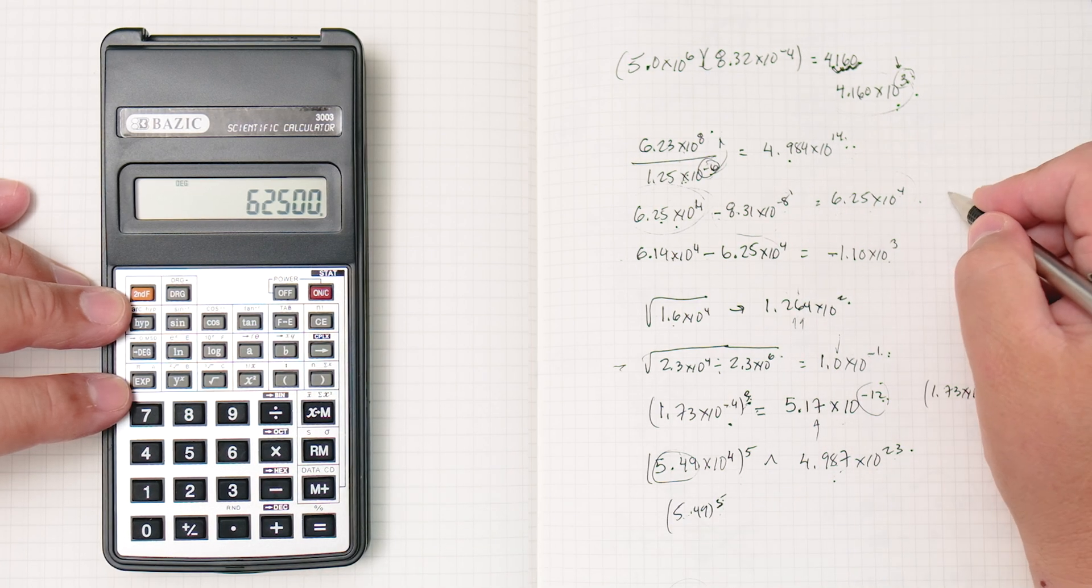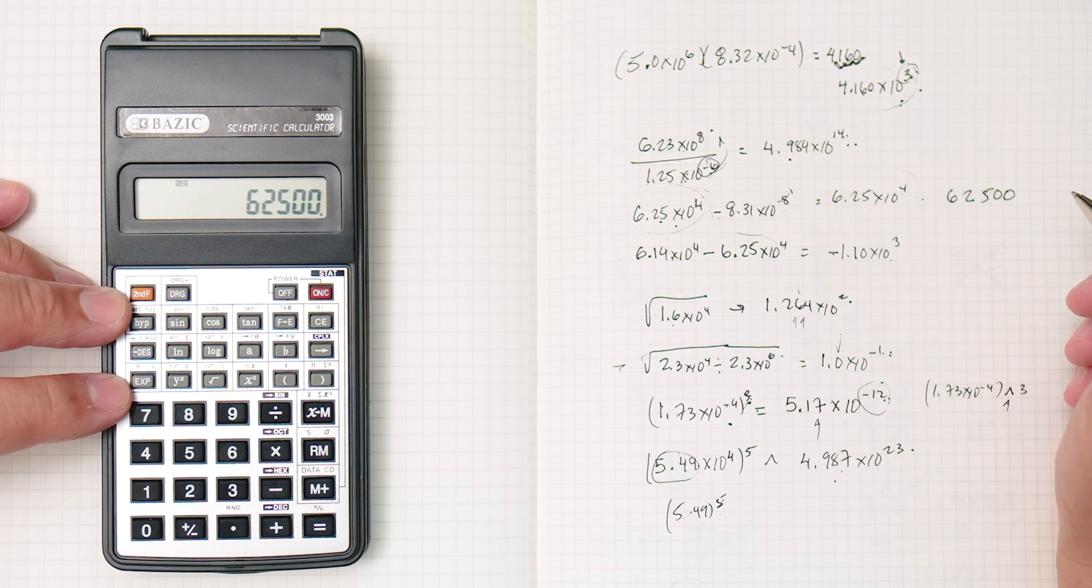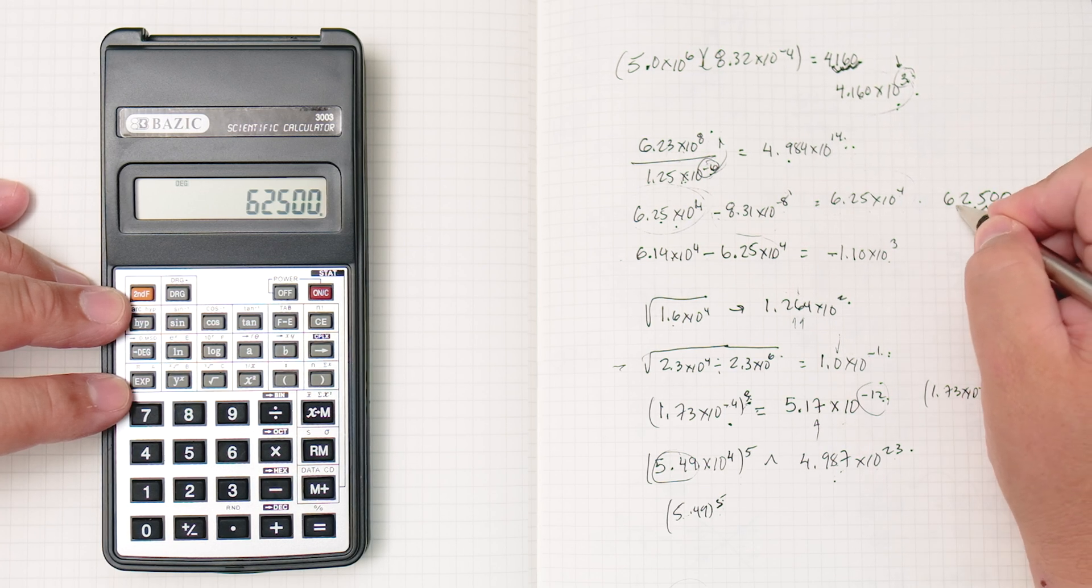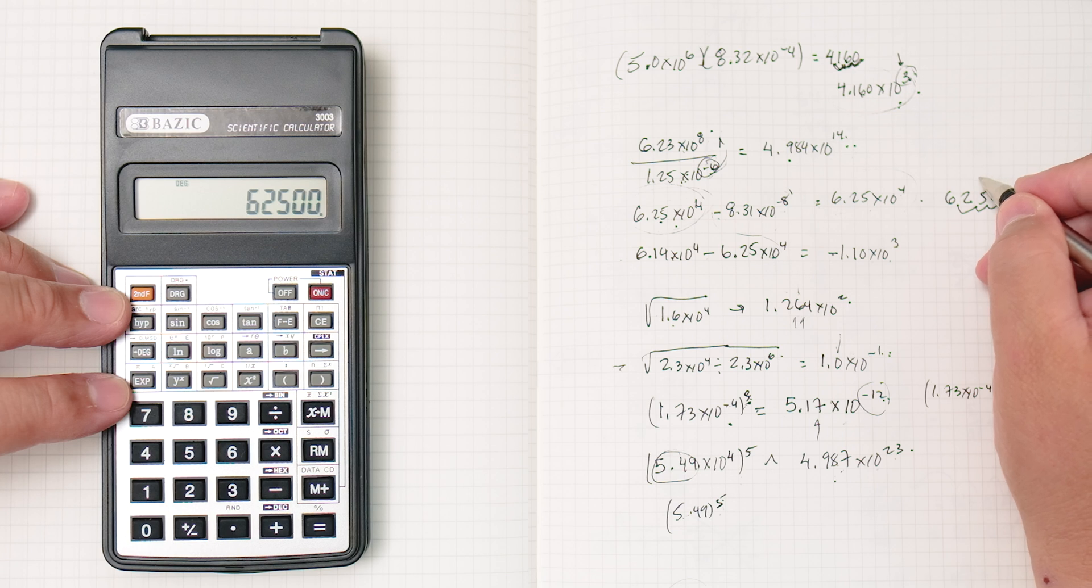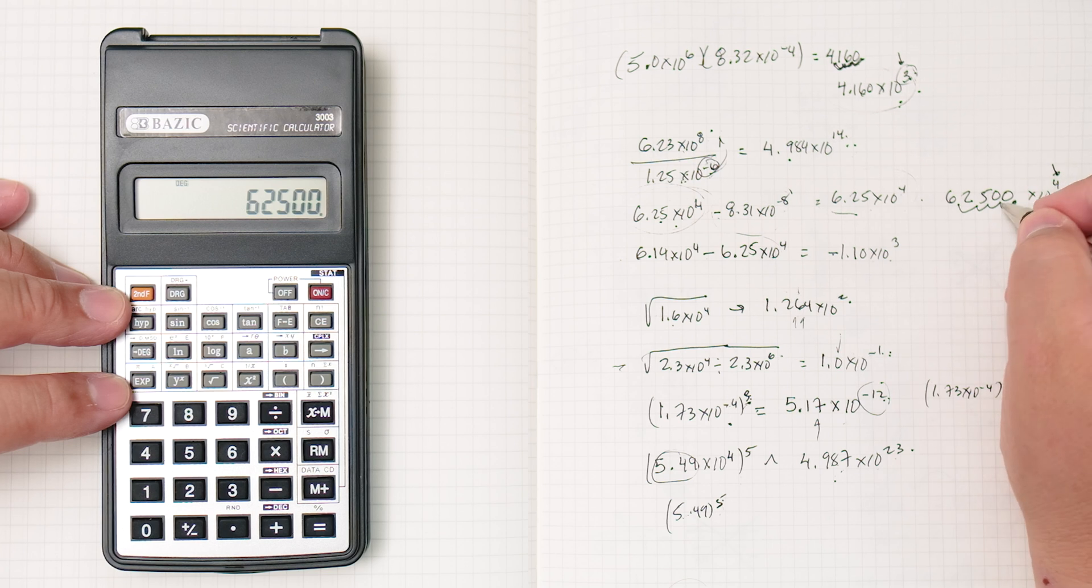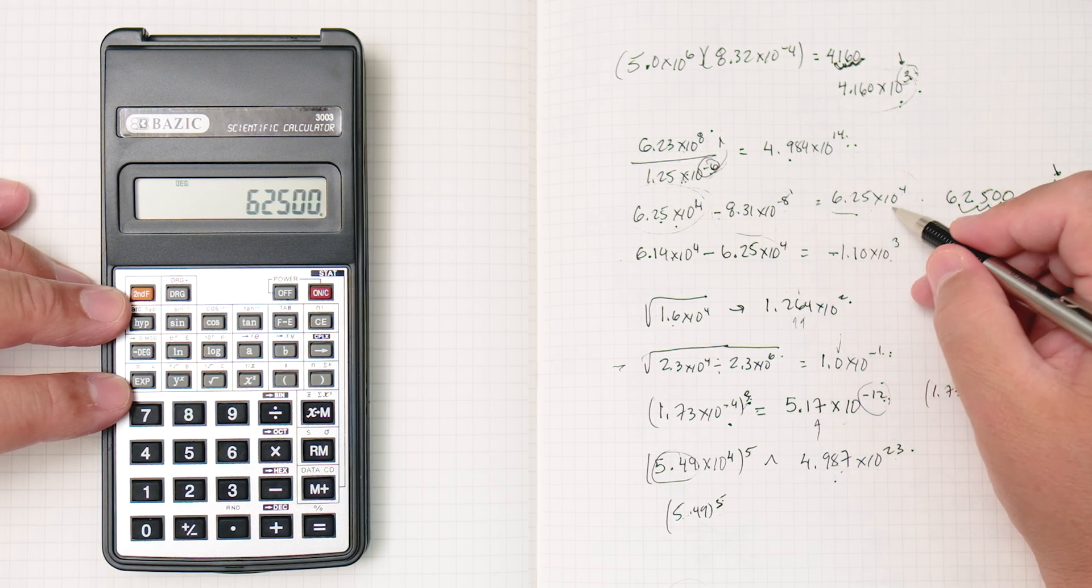Enter. And so the answer here is 6, 2, 5, 0, 0, right, here's the decimal, 1, 2, 3, 4. Making this number smaller, times 10 to, this exponent's going to be that place of 4, that's why we get 6.25 times 10 to the 4th.